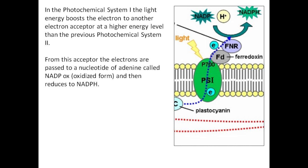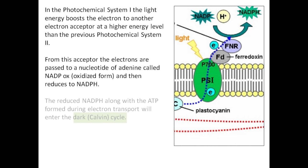From this acceptor, the electrons are passed to a nucleotide of adenine called NADP+ (oxidized form), which is then reduced to NADPH. The reduced NADPH, along with the ATP formed during electron transport, will enter the dark Calvin cycle.